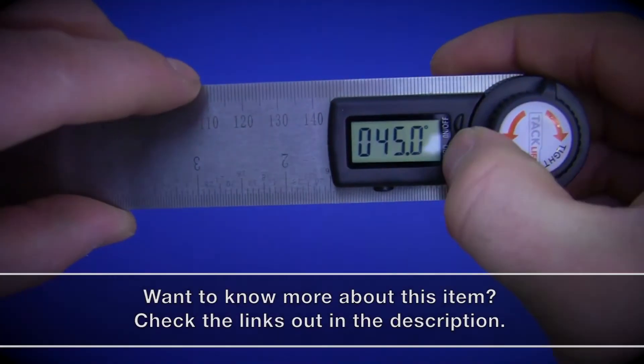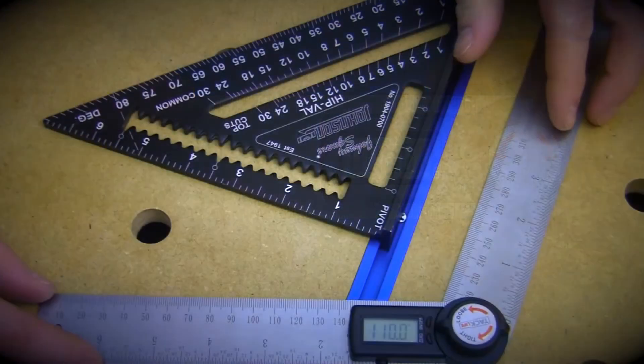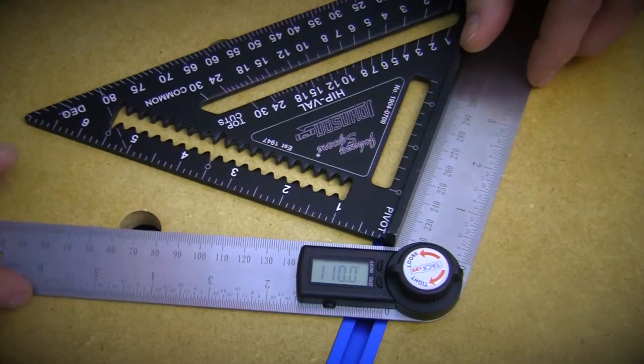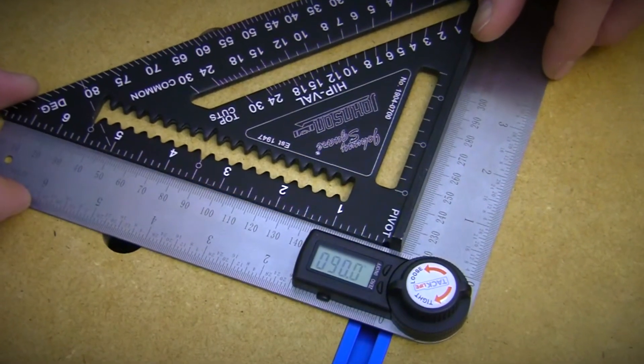I then double checked my calibration against the 90 degree edge of the square, and as you can see here, it reads a perfect 90 degrees.